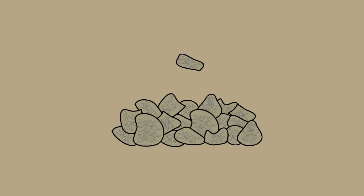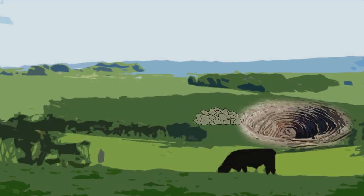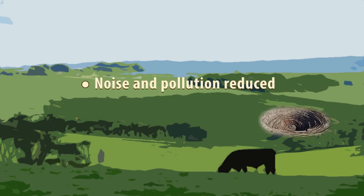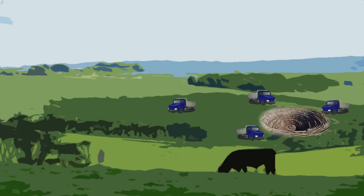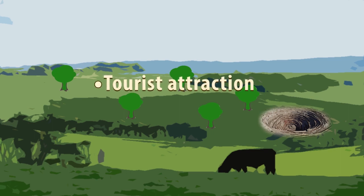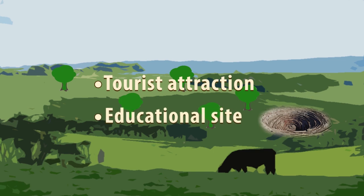Limestone is a very important material and obviously needs to be quarried. Although there are many disadvantages to quarrying, the adverse effects can be minimized. The quarry can be smaller, therefore reducing the noise and pollution levels. Instead of having many trucks transporting limestone out of the quarry daily, the frequency of transportation can be reduced. Once the quarrying is done, trees can be replanted in the surrounding area. The empty quarry may also be used as a tourist attraction and as an educational site, educating the public about limestone, where it comes from, and its many uses.